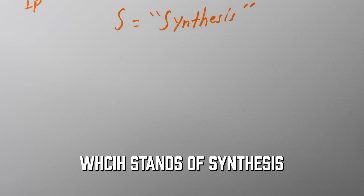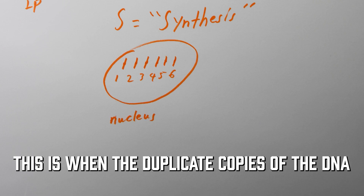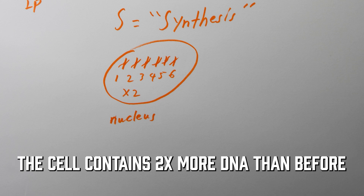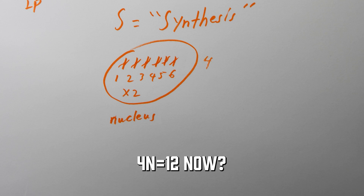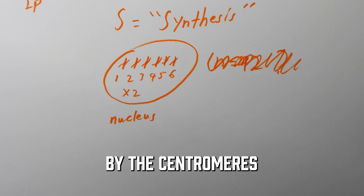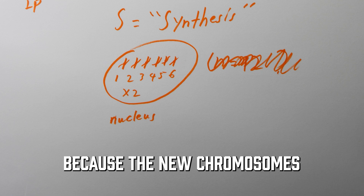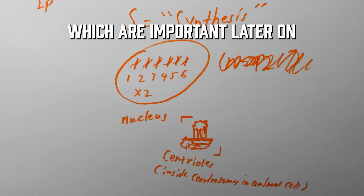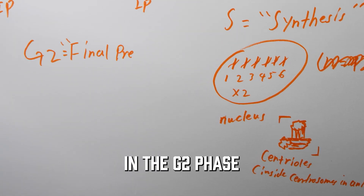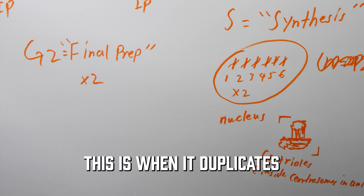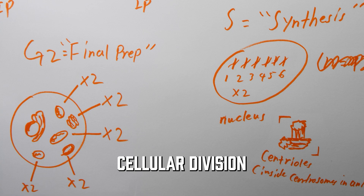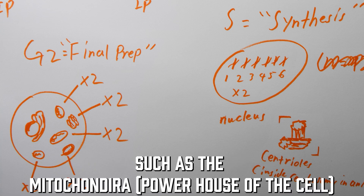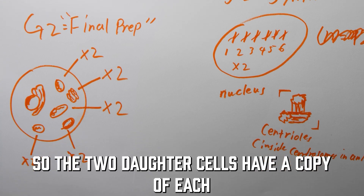Then comes the S phase, which stands for synthesis. This is when the duplicate copies of the DNA needed for cellular division are synthesized. After this point, the cell contains two times more DNA than before. So it would be 4n equals 12 now, except it's not, because we count the chromosomes by the centromeres — so it will still be 2n equals 6 because the new chromosomes share the centromeres with the originals. The S phase also duplicates the centrosomes, which are important later on.